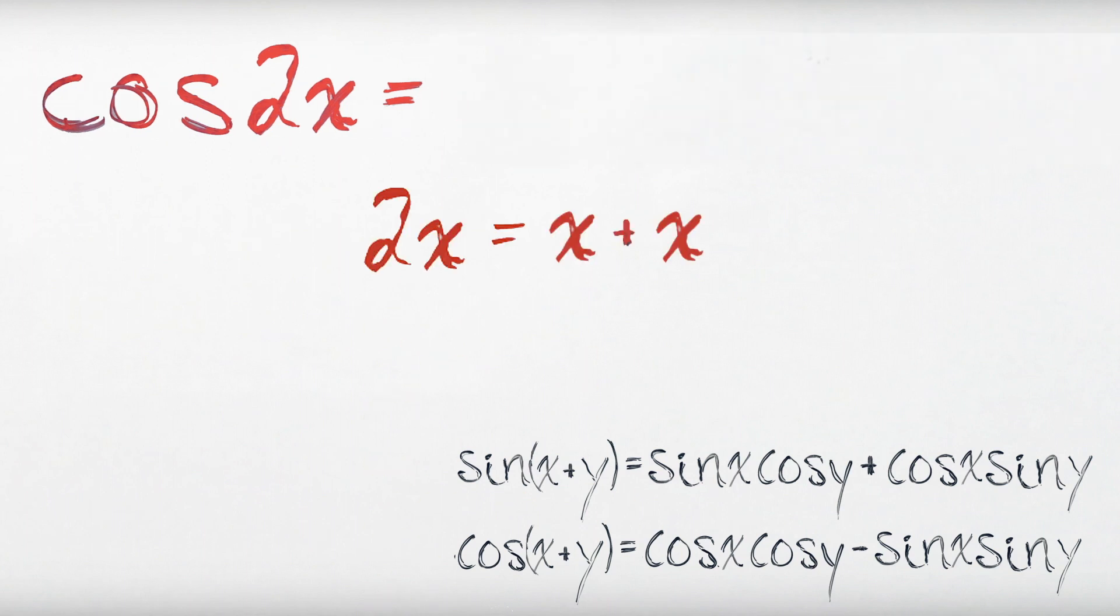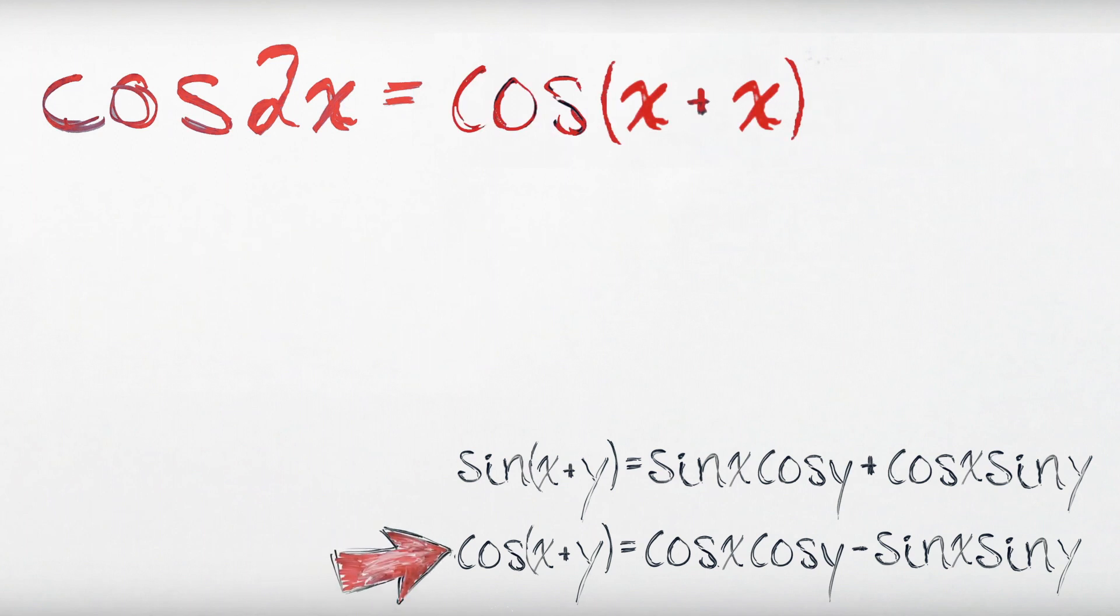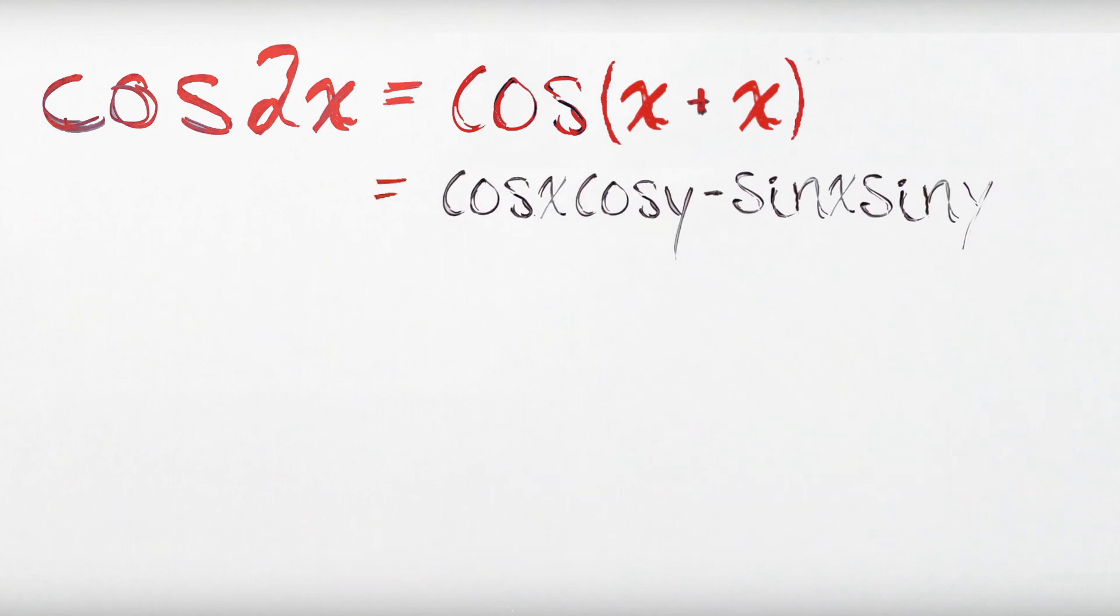Using the same process as the last proof, we can write cos of 2x as cos of x plus x. And this time, that looks like the left side of this identity, except the y has been replaced by another x. So let's take the right side, replace the y's with x's, and we end up with something like this.